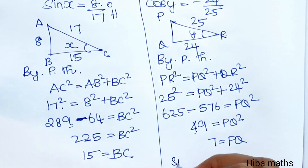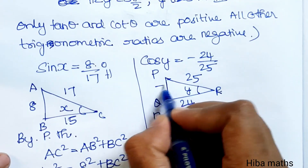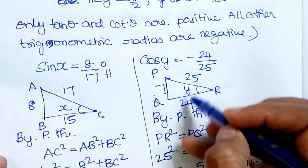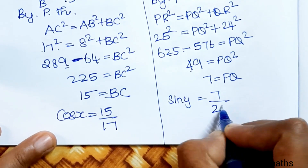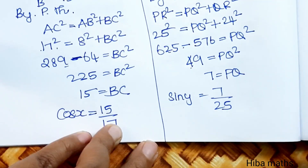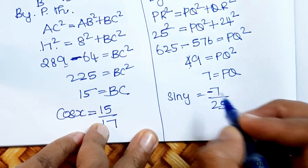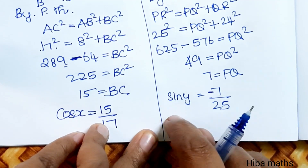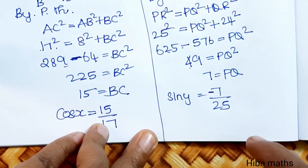So sin y equals opposite by hypotenuse, and the opposite side is 7, giving sin y equals 7 by 25. Since y is in the third quadrant, sin y is negative. Therefore sin y equals minus 7 by 25.